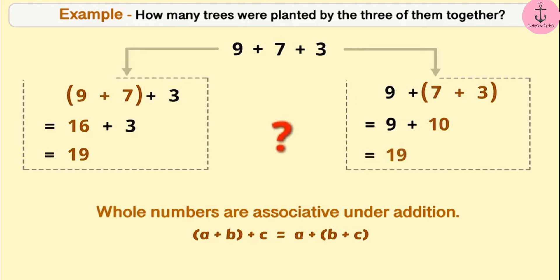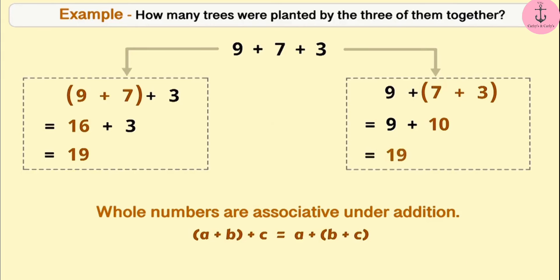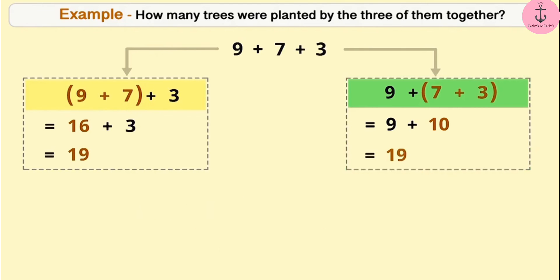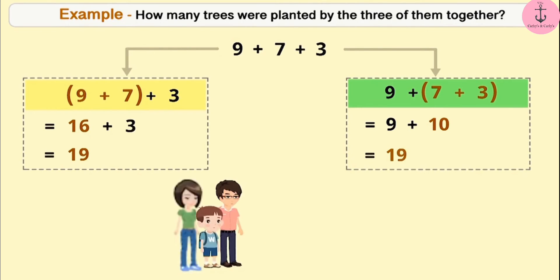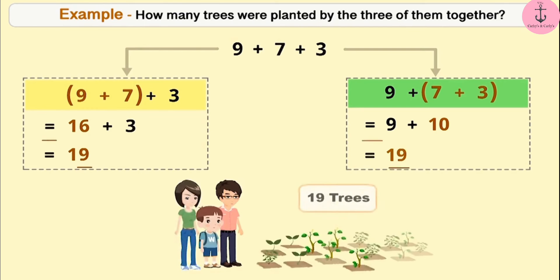Can you tell which of the given methods is easier? Think for a while. As you can see, compared to (9 + 7) + 3, it is easier to solve 9 + (7 + 3). In this way, associative property makes addition of whole numbers easy. In both methods, the total number of trees planted by Akash, Ajay and Babita will be 19.